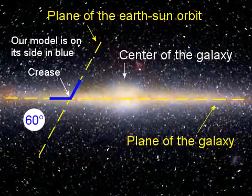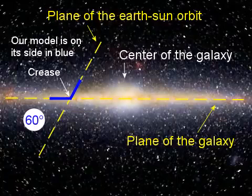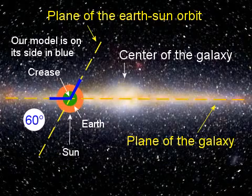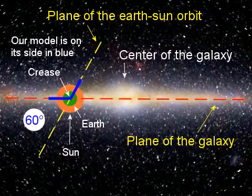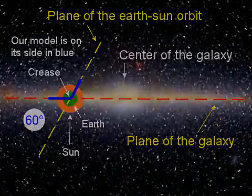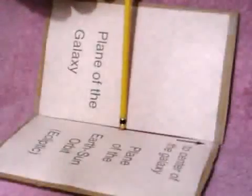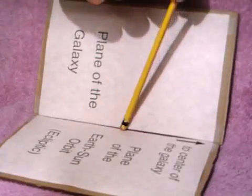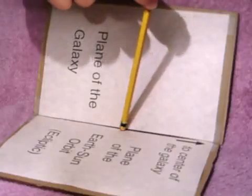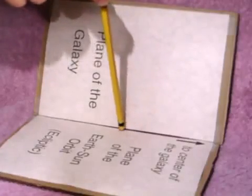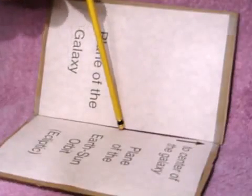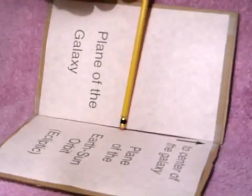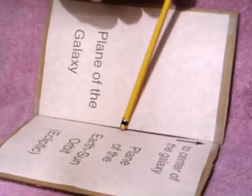That is why the galactic alignment is correctly stated as being between the Earth, the Sun, and the plane of the galaxy, rather than the center of the galaxy. Now, let's make the top of the pencil go around in a circle while maintaining the twenty-three degree tilt. Again, imagine that one time around takes twenty-six thousand years. This period of time has several names, and one of them is the Great Year.